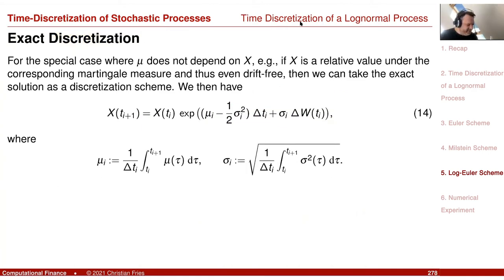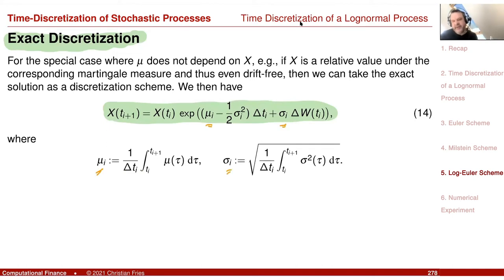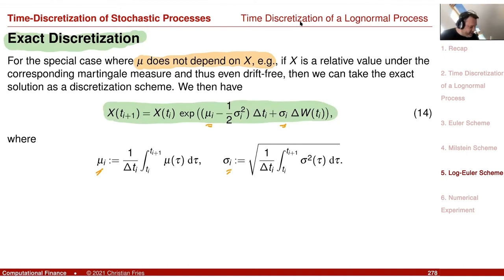If sigma does not depend on t — i.e., sigma is a constant — this is already the exact solution. And if you can integrate sigma explicitly, and additionally mu does not depend on x so you can integrate mu, you can write down the exact solution immediately. The exact discretization replaces the coefficients with the exact integrals, giving the true solution with no tilde — not an approximation.